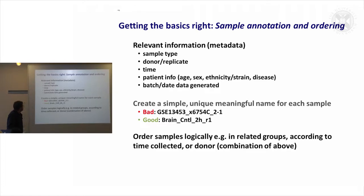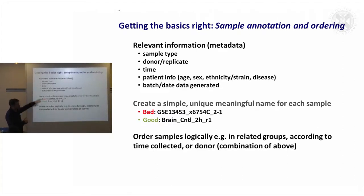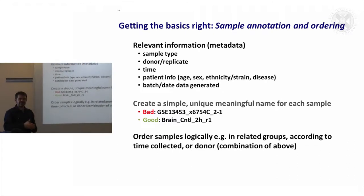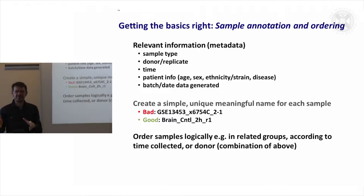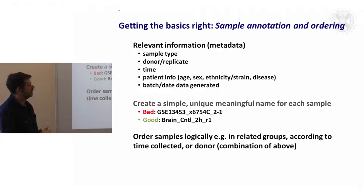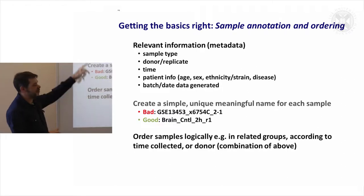Often with a sample, you know other stuff about that sample. Sometimes you've downloaded from the database and don't get information, but quite often when you download a public record set, because of the minimum information about a microarray experiment, the MIAME standard, people have gotten used to storing metadata. Metadata might be the sample type, like brain macrophage or rat macrophage.